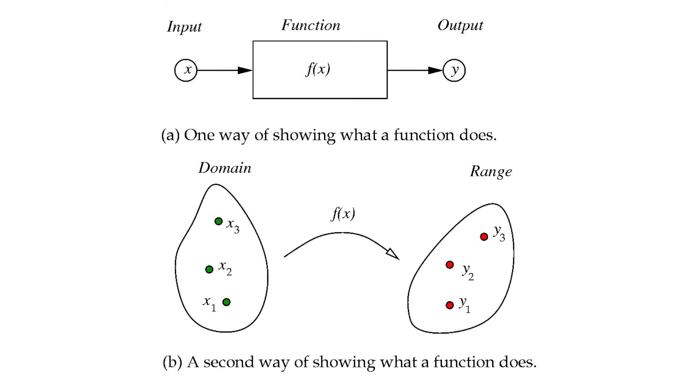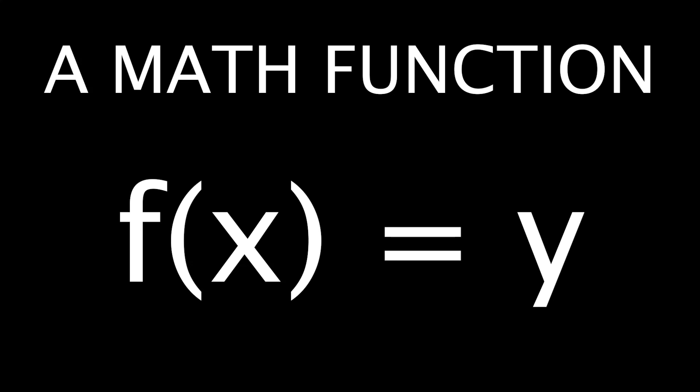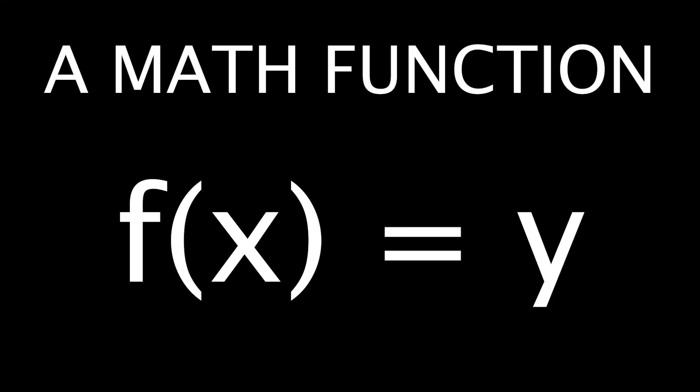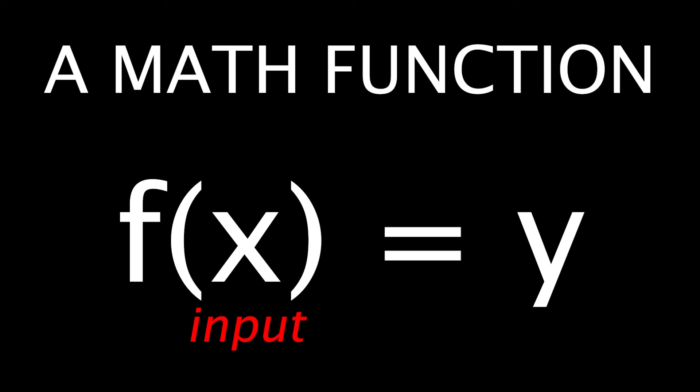Focus. In math, there exists this thing called a function that oddly resembles a neuron. You'll typically see a function notated like this: F of X equals Y. To connect these symbols back to the neuron it resembles, X represents the input into the neuron, F represents the neuron itself, and Y represents the output released by the neuron.